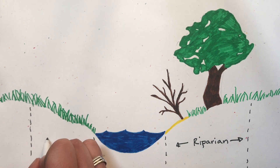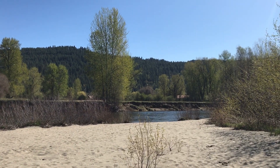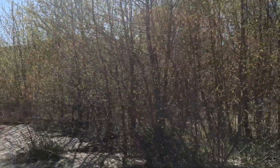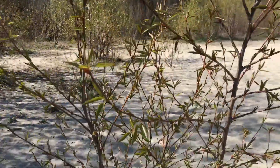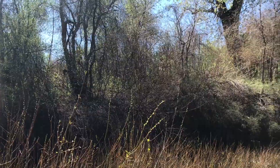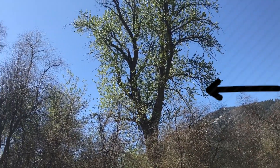You can find riparian ecosystems in both Leavenworth and Wenatchee. Because there's water nearby, there is a diverse amount of plant life in a riparian ecosystem. Some common plants that you'll likely find here are willows, which you can see here, and cottonwood trees, which you can see here.